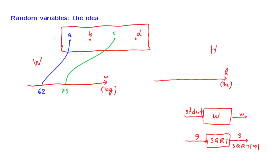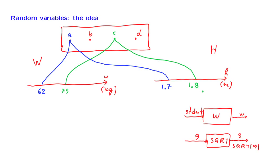So if the outcome of the experiment was student A, then this random variable would take a value which is the height of that student — let's say it was 1.7. Or if the outcome of the experiment was student C, then we would record the height of that student, and let us say that it turns out to be 1.8. Once again, height with a capital H is an abstract object, a function, whose value is determined once you tell me the outcome of the experiment.